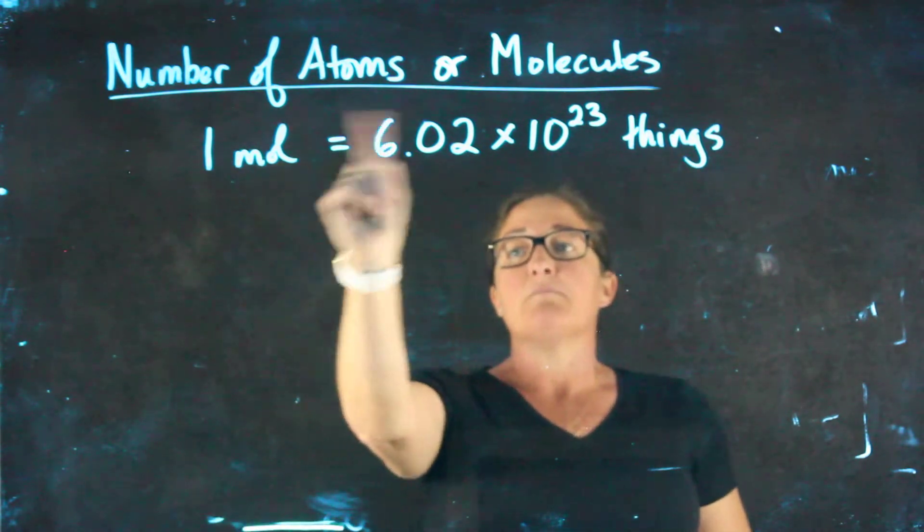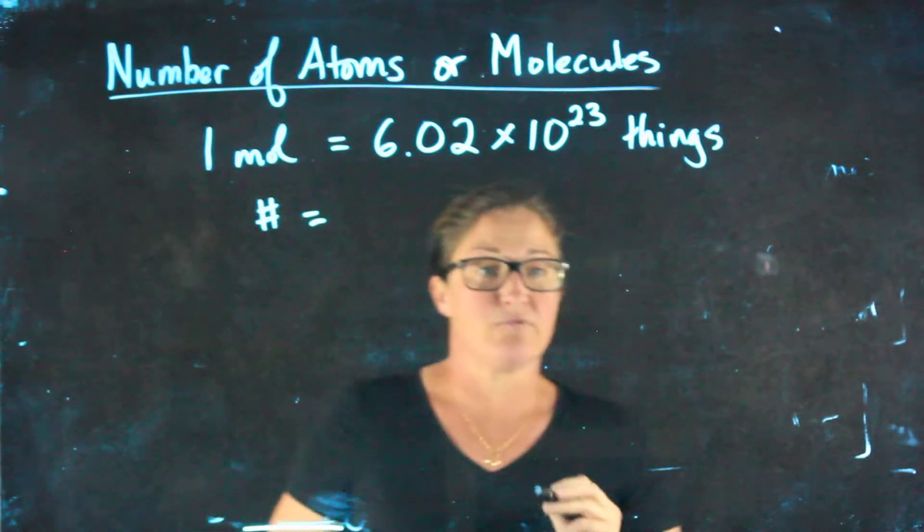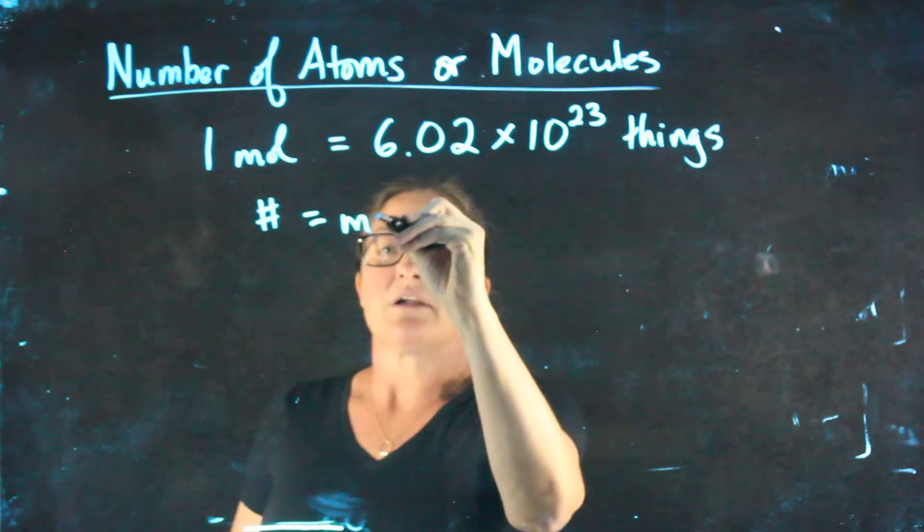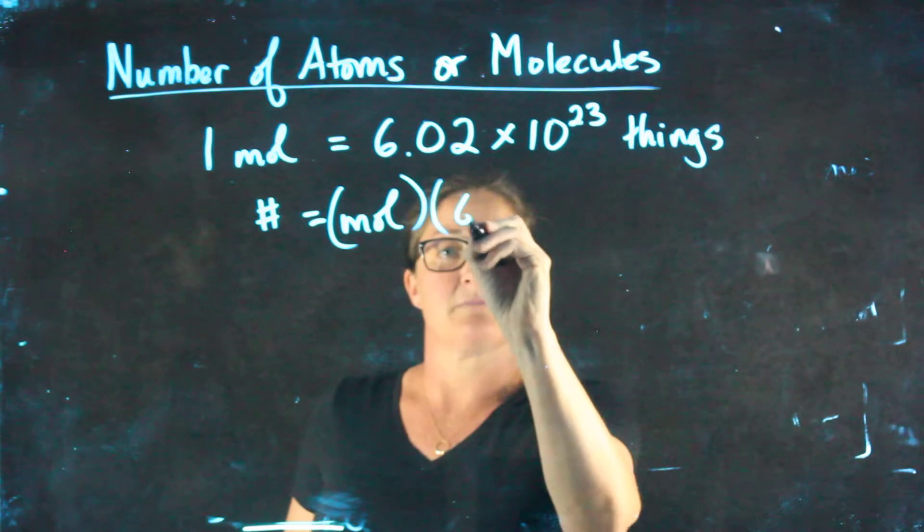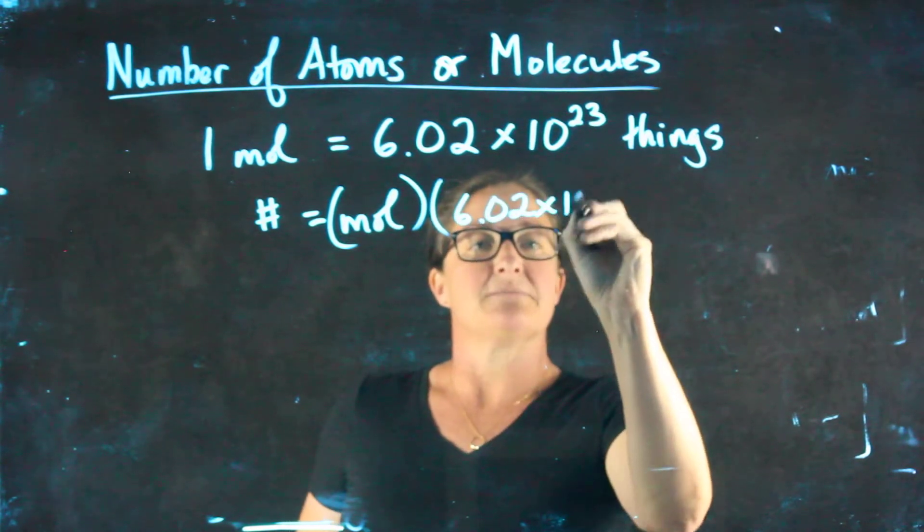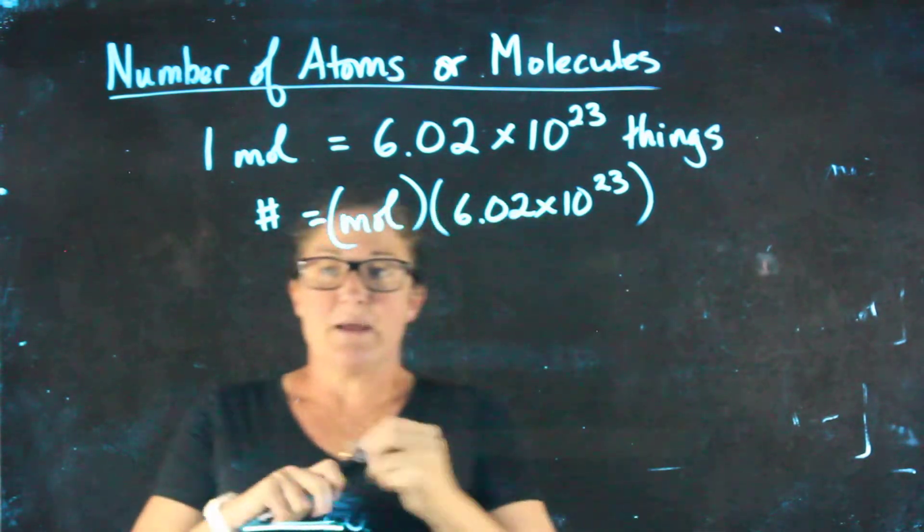So when we say one mole, we have that many things, which gives us our second formula, which is number equals moles times Avogadro's number. 6.02 times 10 to the 23rd is known as Avogadro's number.